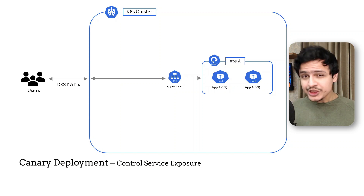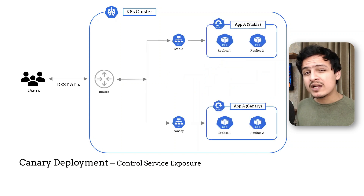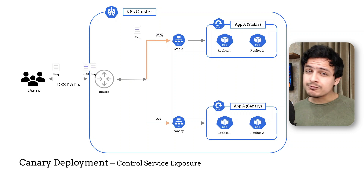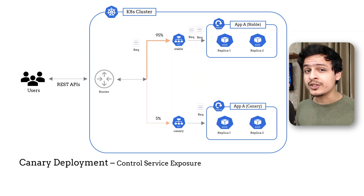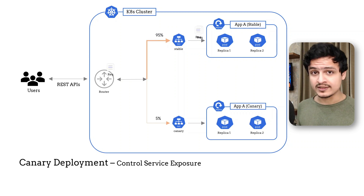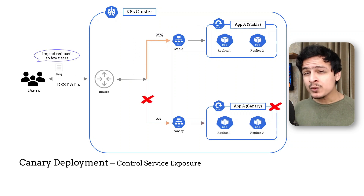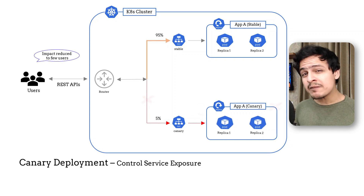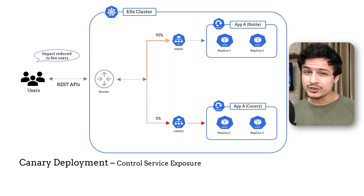We can technically achieve this by running two Kubernetes deployments and having some kind of a router in front of them. We can forward just 5% of the total traffic to the new version, while the existing version continues serving the remaining requests. This way, even if our new version crashes or is really slow, only 5% of the total traffic will be impacted.